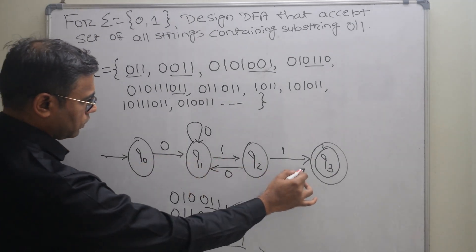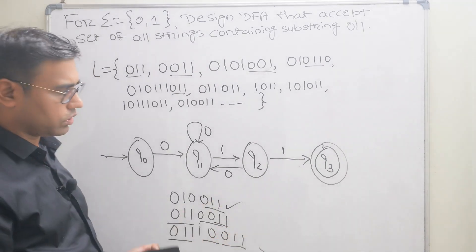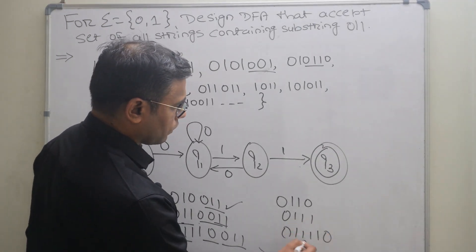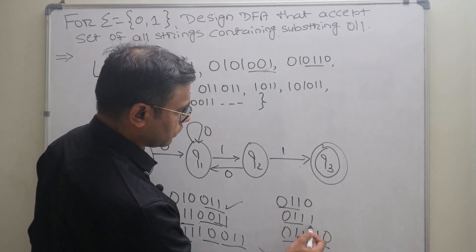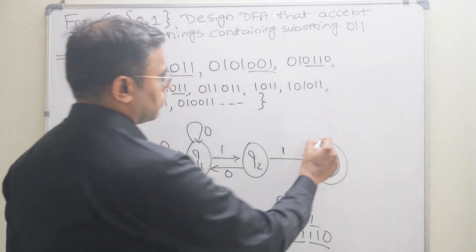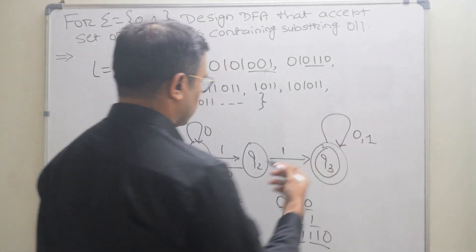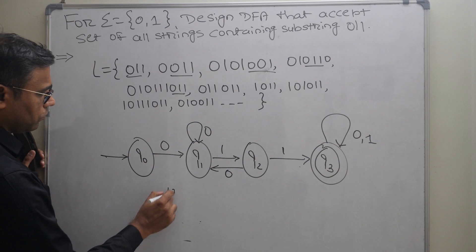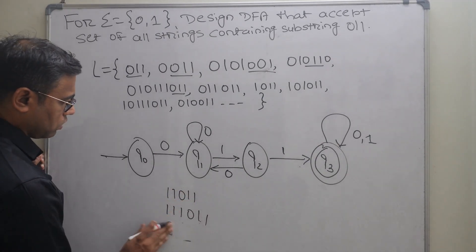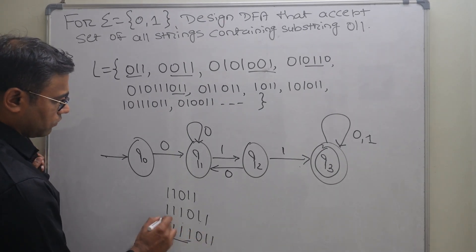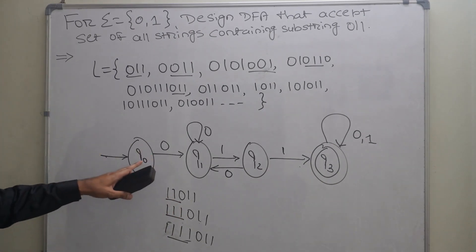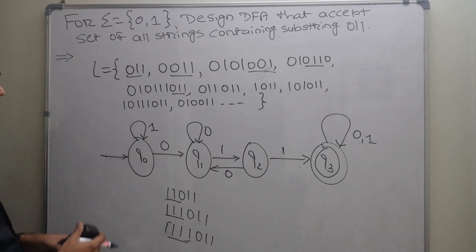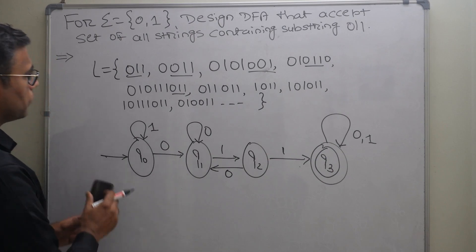After reaching the final state q3 (substring 011 matched), the string can end with any number of 0s or 1s. To handle this, we apply a self-loop of both '0' and '1' on q3. This way q3 accepts any continuation after the substring 011 has been found.